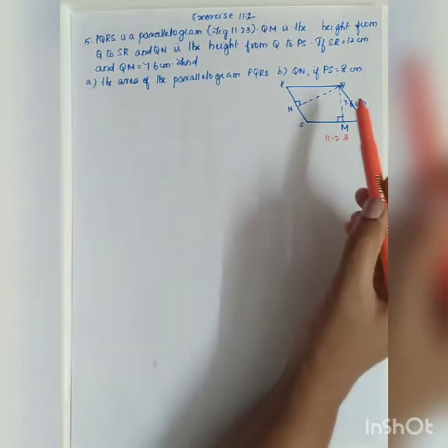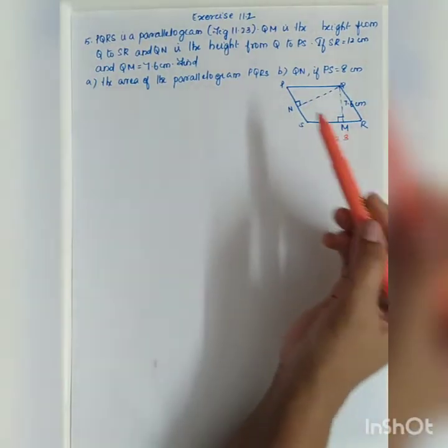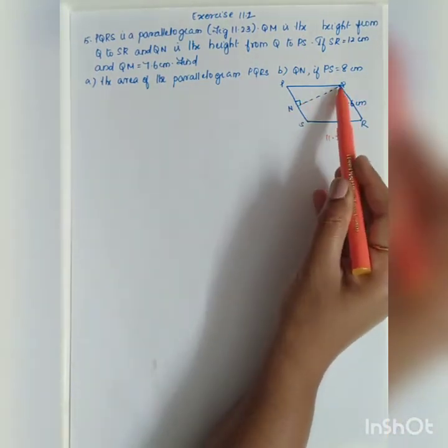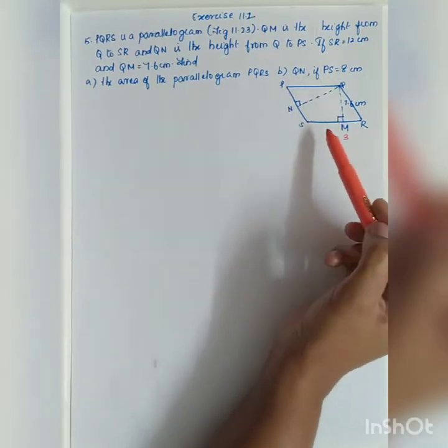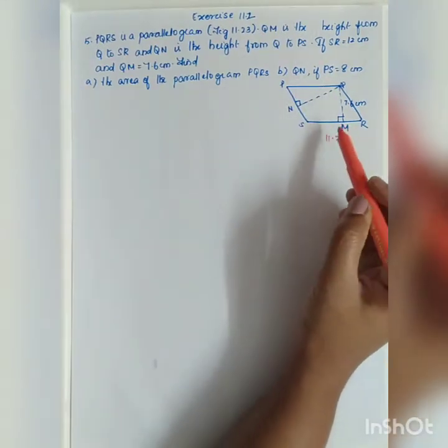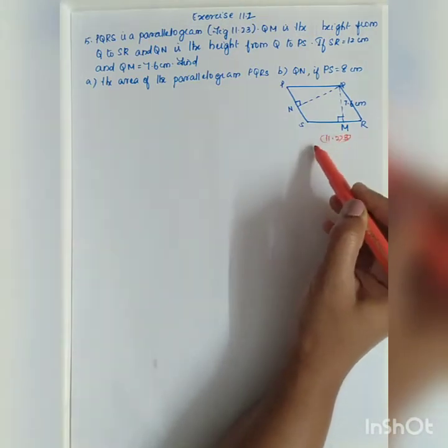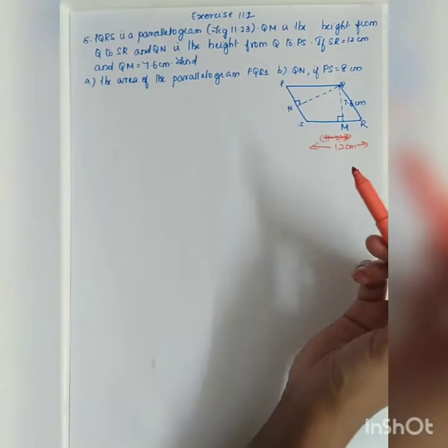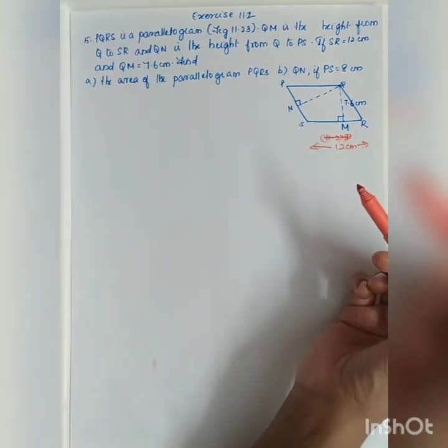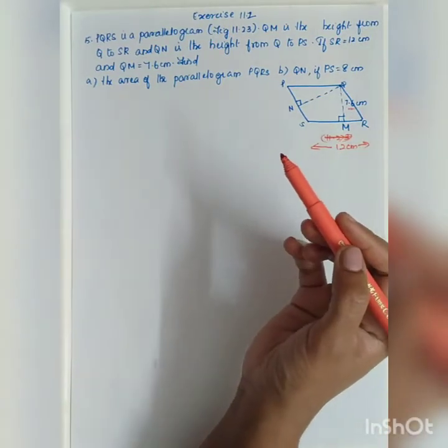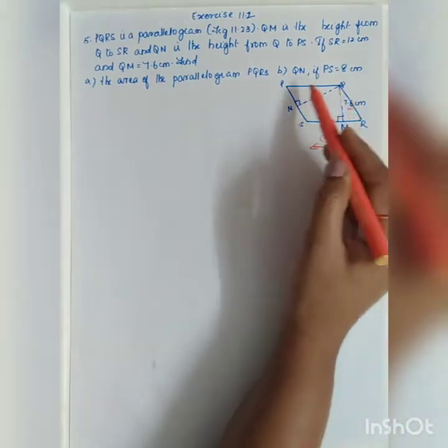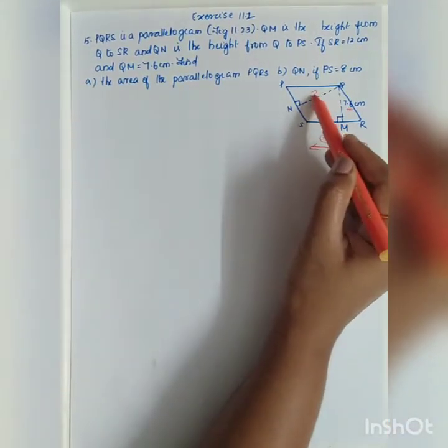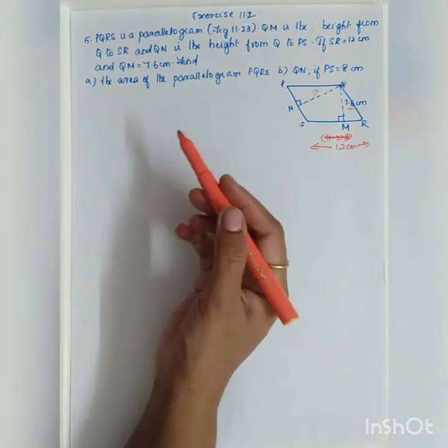QM is the height from Q to SR and QN is the height from Q to PS. If SR is equal to 12 cm and QM is equal to 7.6 cm, find the area of the parallelogram PQRS and find QN if PS is equal to 8 cm.